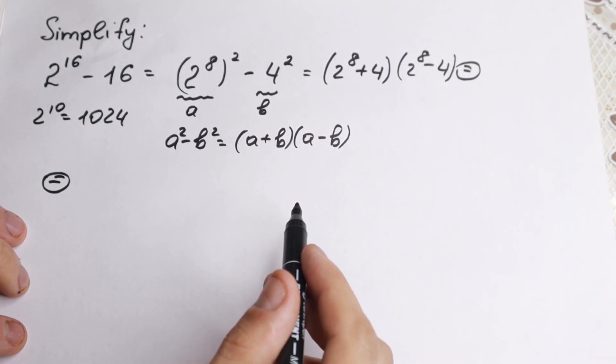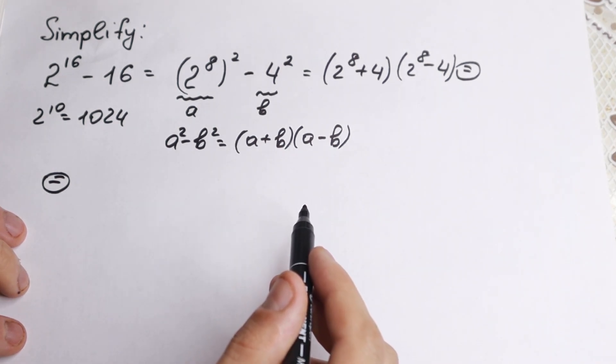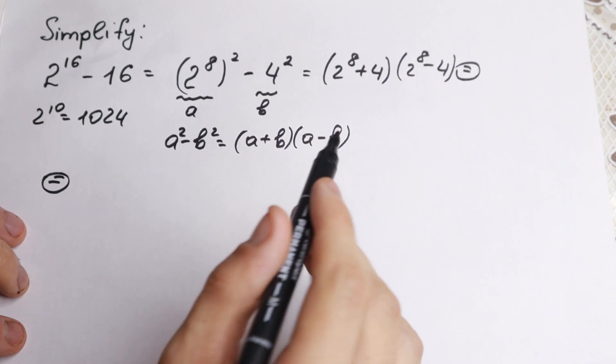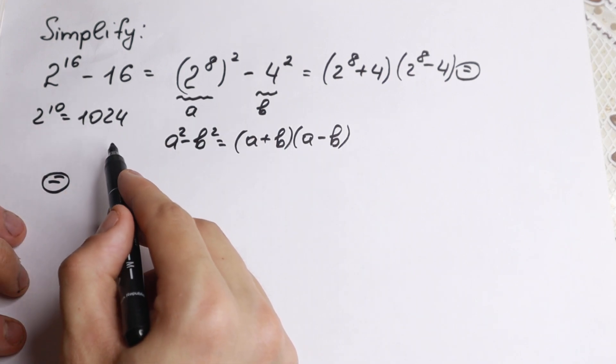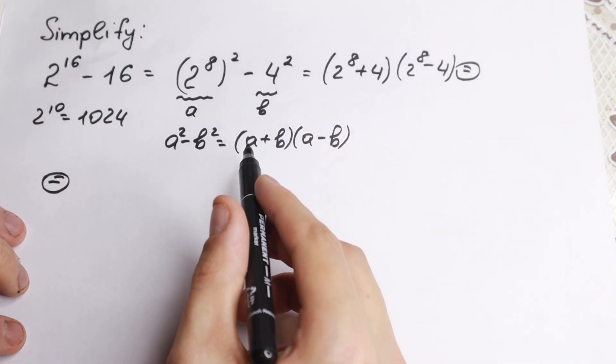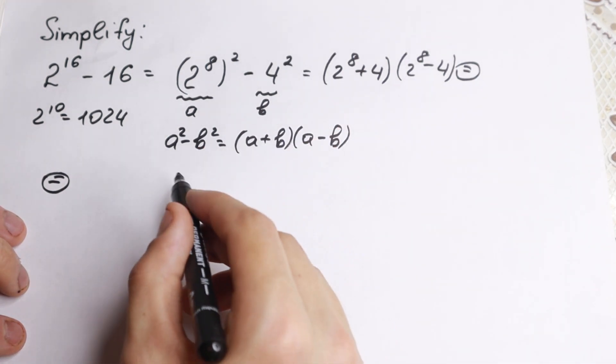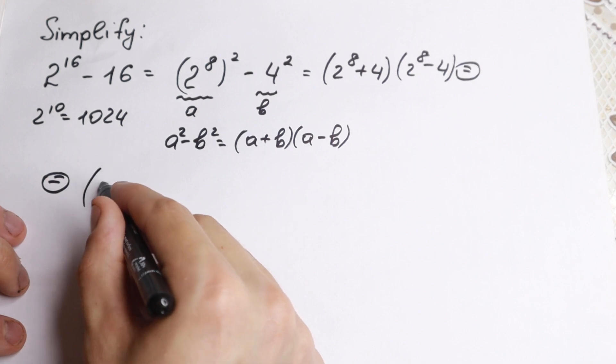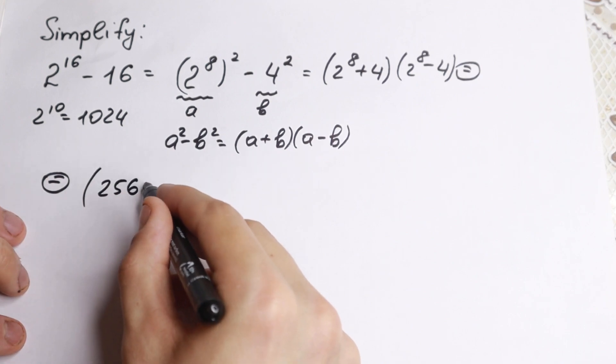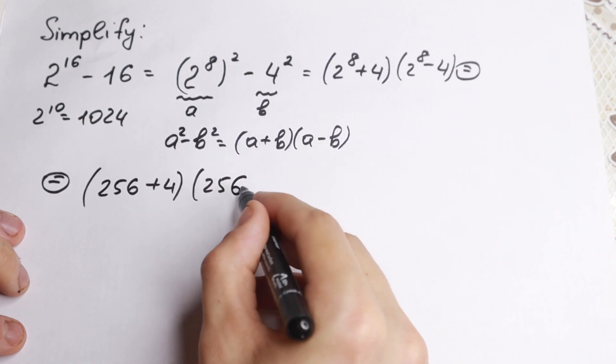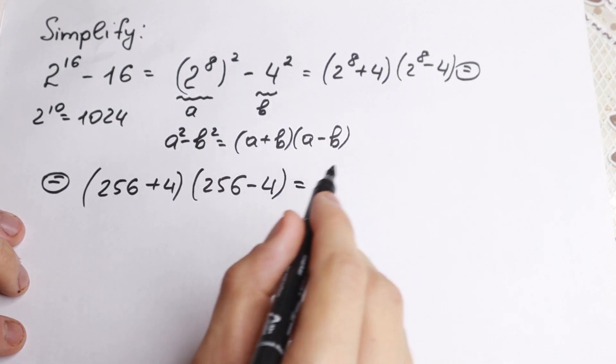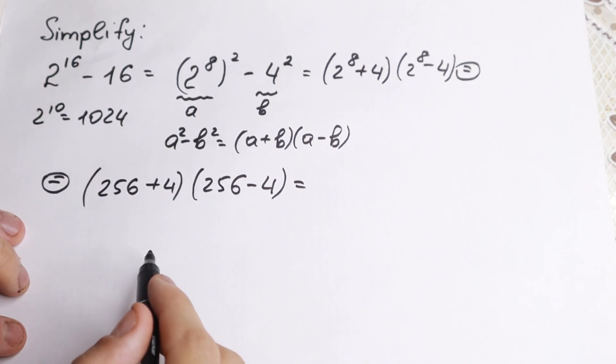But what about 2 to the 8th power? 8 is like a huge number, but 2^8 is not like a huge number if we're talking about the final result. 2 to the 10th equals 1024, and 2 to the 8th equals 256. So we have 256 plus 4 times 256 minus 4.